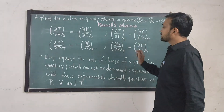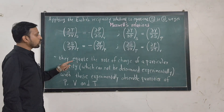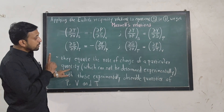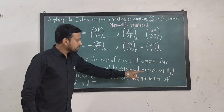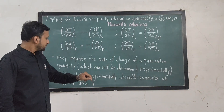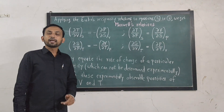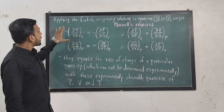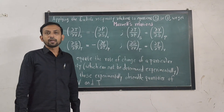All these relations are important because each and every relation equates the rate of change of a particular quantity that cannot be determined experimentally with those experimentally observable quantities of pressure, volume, and temperature. In the next video we will learn how to write these Maxwell relations using the thermodynamic square. Thank you.